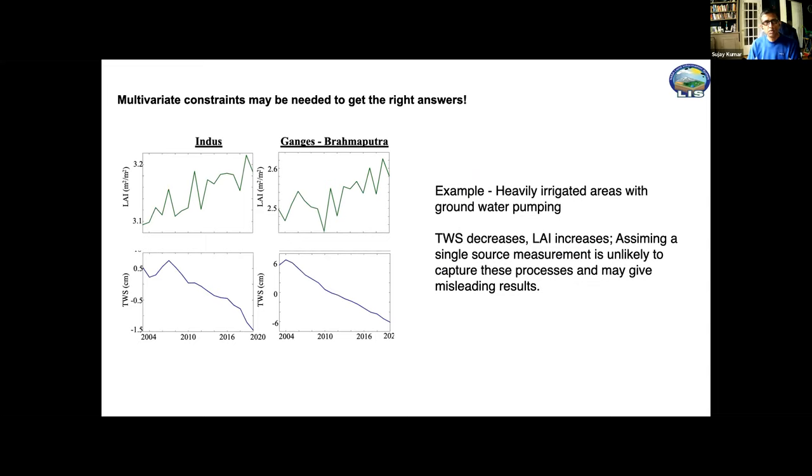Final point is we often look at a single measurement but looking at multivariate constraints may be needed. This is an example of the Indus and Ganges-Brahmaputra basin. If you look at the LAI it shows a significant increase from irrigation and agriculture but all that water comes from the groundwater which is taken out. If you look at the TWS signal it actually goes down. If you only assimilate one of these you're going to get the wrong answers because if you simulate only the groundwater depletion the model is going to simulate a decrease in all your other quantities.